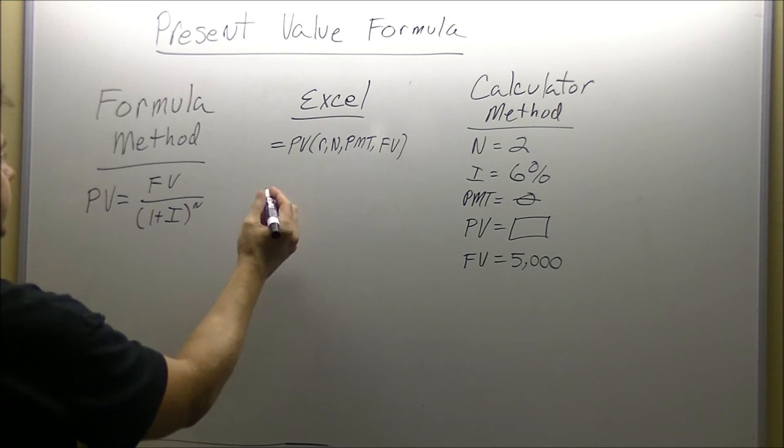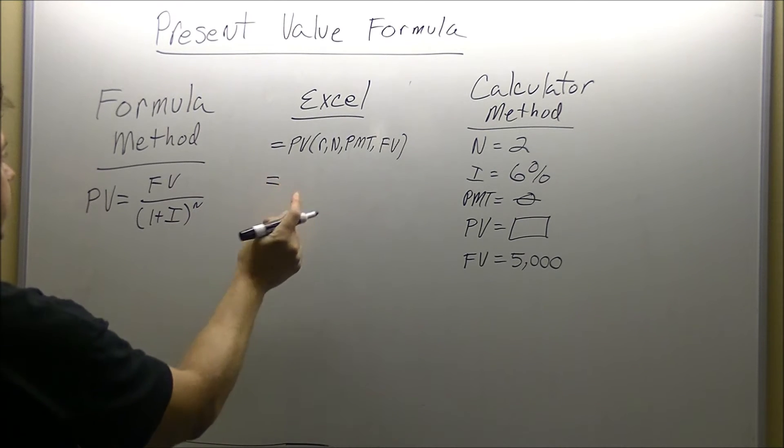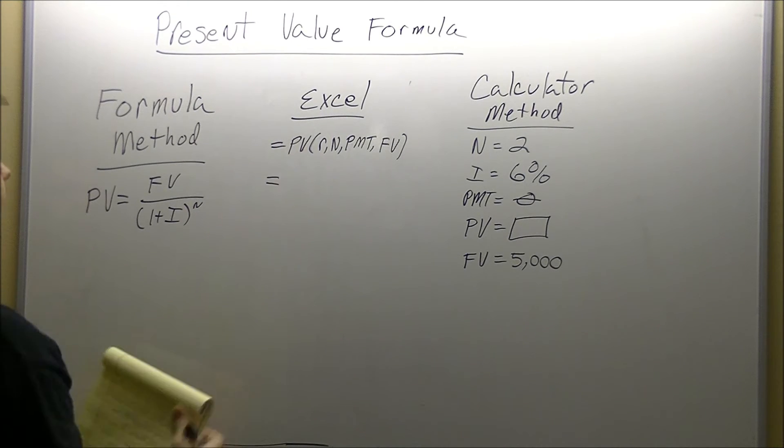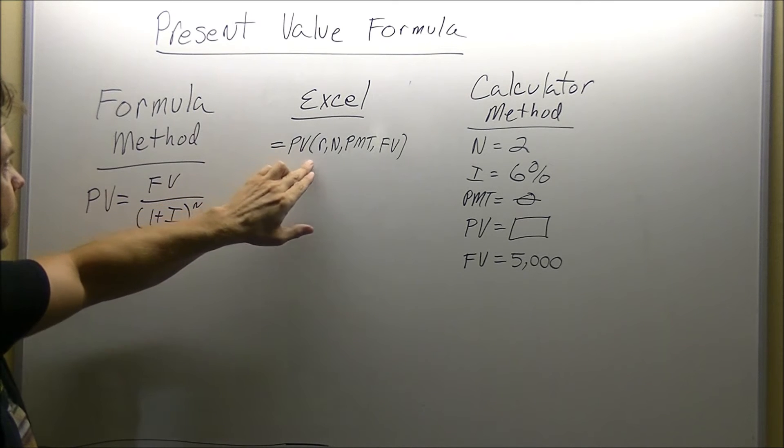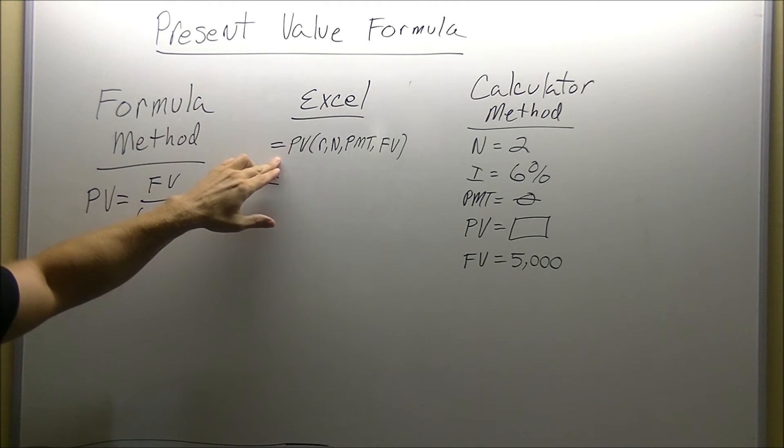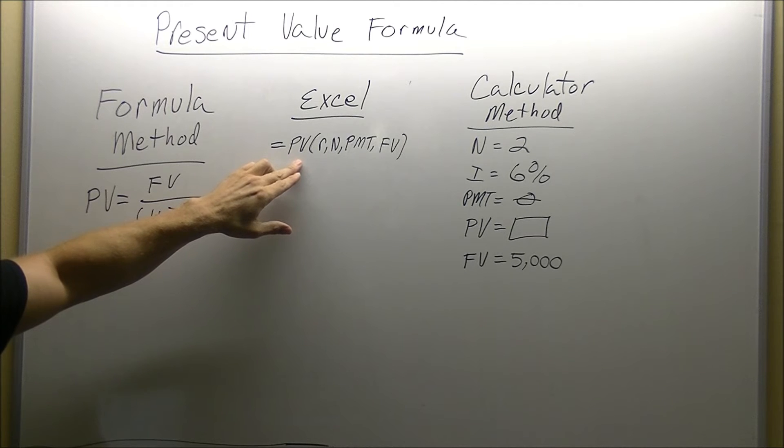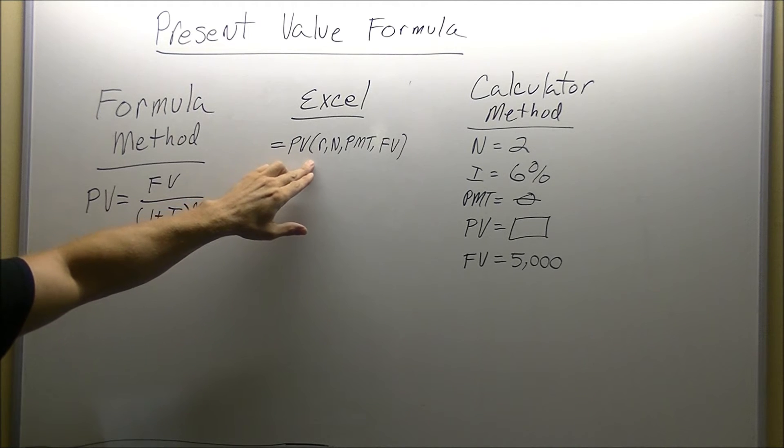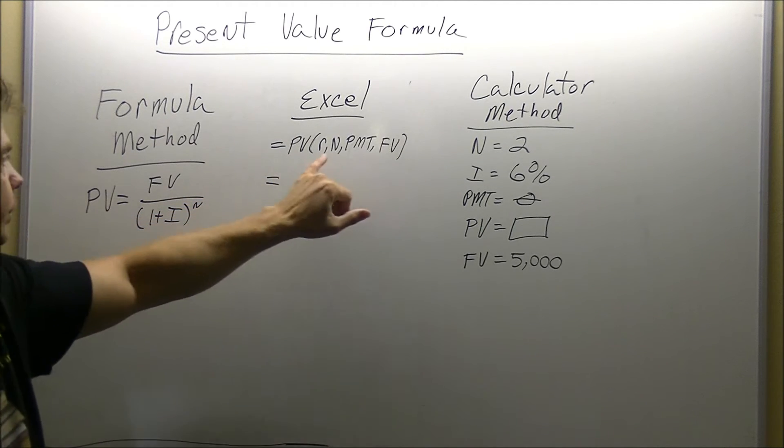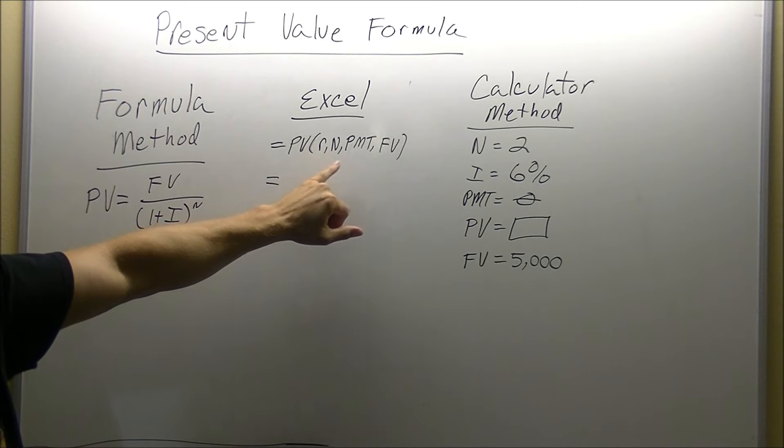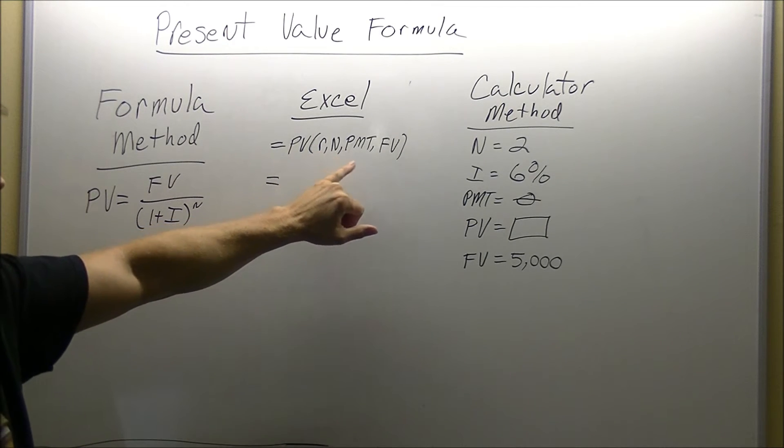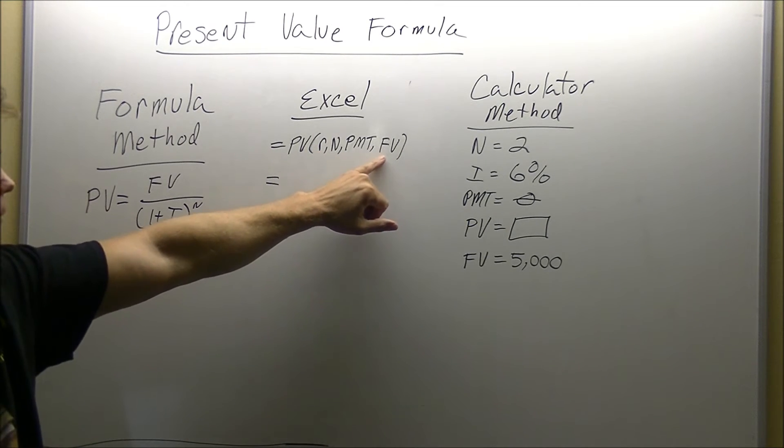For the Excel spreadsheet, the way we would do it, it would be present value, or PV. We always start with the equal sign for Excel, we put the equal sign in the cell, PV, open up a parenthesis, then we would put the interest rate, number of years, payment, and future value.